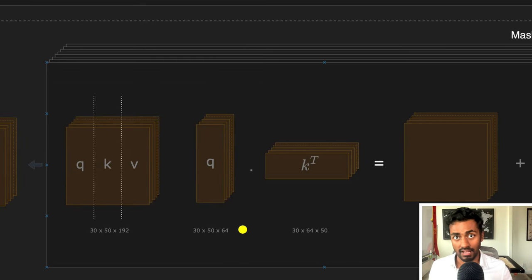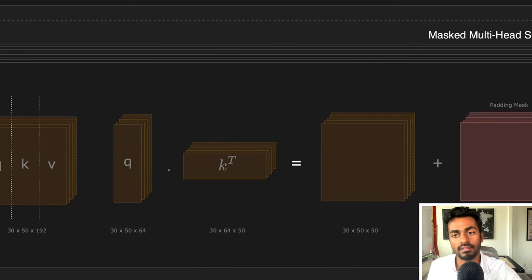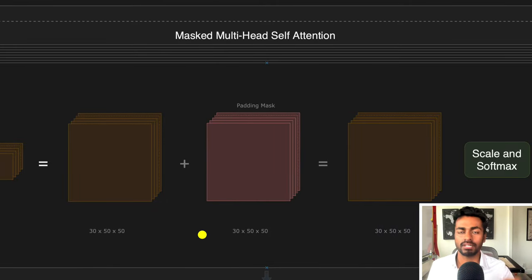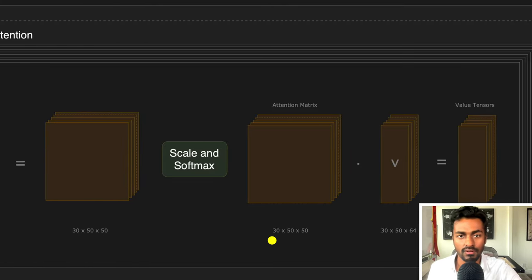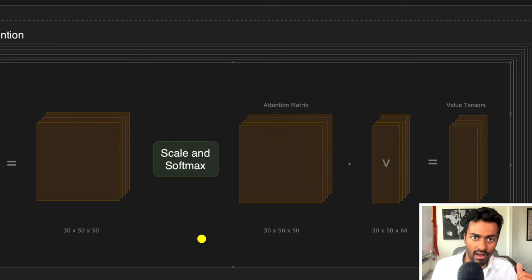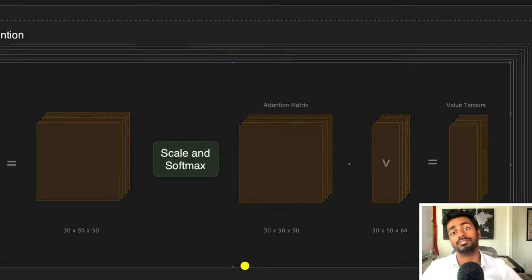The crux of full self-attention is taking the entire query matrix and applying it to the entire key matrix to get affinity values for every time step with respect to every other time step. We then add a padding mask to ensure that every time step does not pay attention to padding tokens, yielding a tensor of 30×50×50. Scaling is required because large affinity values fed directly into softmax can produce attention weights very close to one or zero, which during backpropagation leads to very small gradients that can vanish.